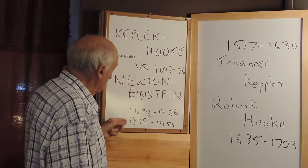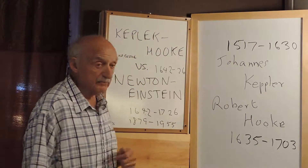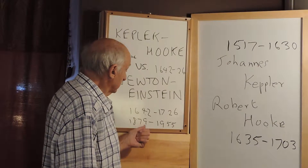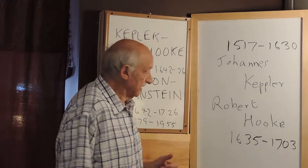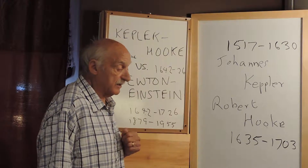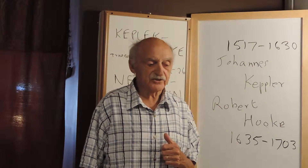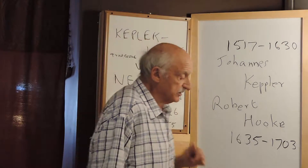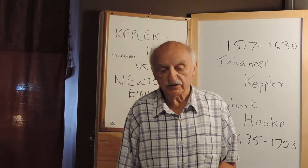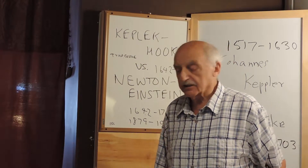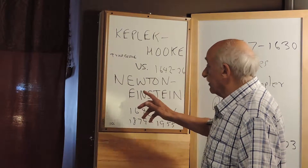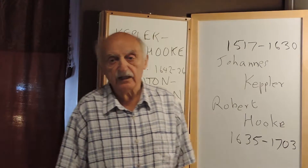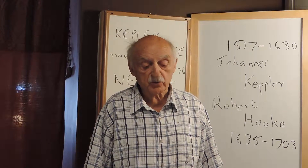Einstein was born in 1879 and died in 1955. Einstein used Newton's universal gravity constant to derive his general theory of relativity. What's significant about both Newton and Einstein is that they believed the force of gravity is inversely proportional to the square of the distance.